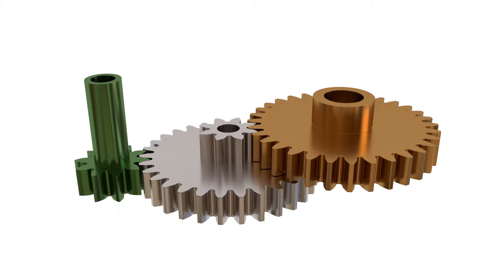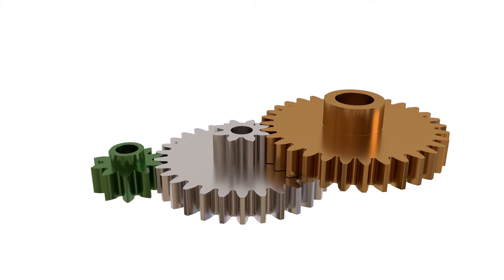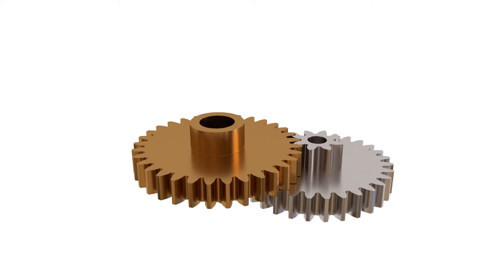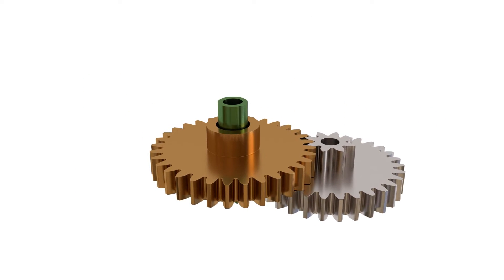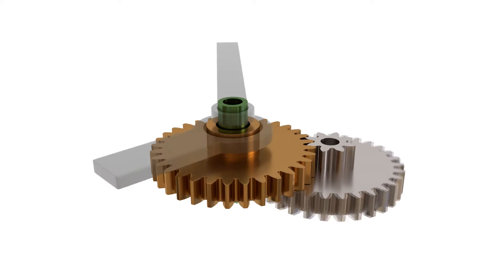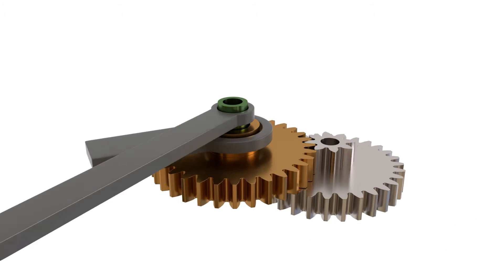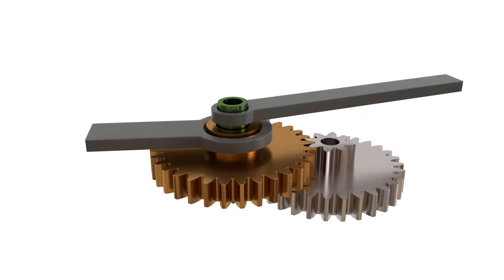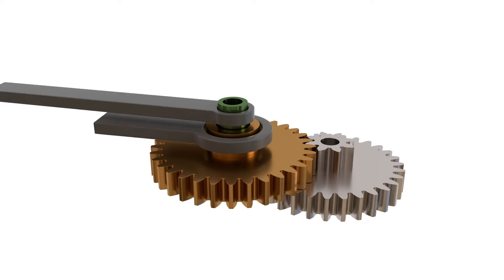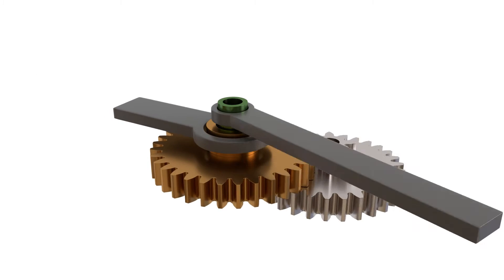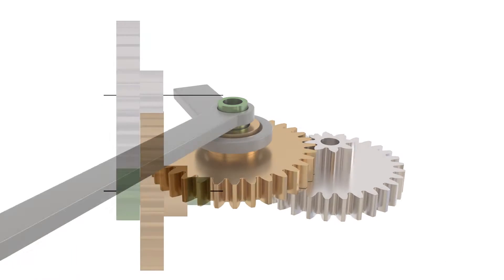We will be designing a simple two-stage gear train with the overall ratio of 1 to 12, with the input and output shafts mounted on the same axis. A mechanism like that can be used in a toy clock. Let's look at the schematics.